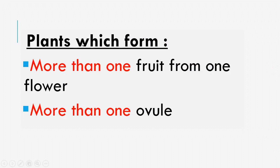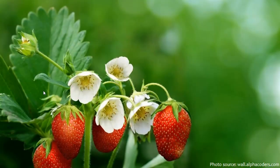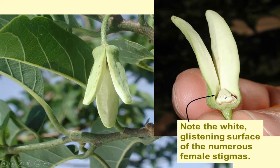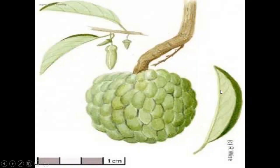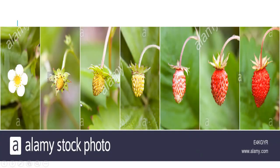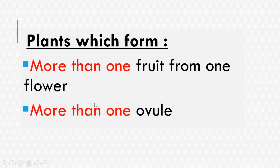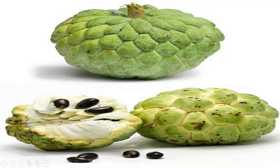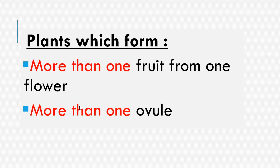What are aggregate fruits? Plants which form more than one fruit from one flower. There are many small parts — many white glistening surfaces of numerous female stigmas. There are many stigmas forming many small fruits, having many small seeds. It has more than one ovule, which is obvious from these pictures. So, this is a plant which has more than one fruit from one flower and has more than one ovule.